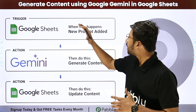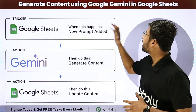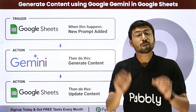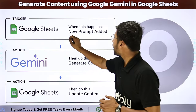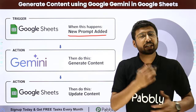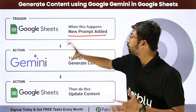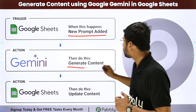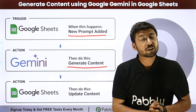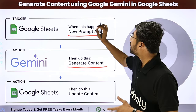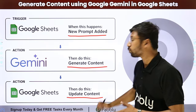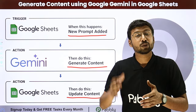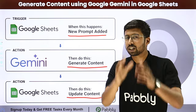In this video, we are going to learn how to generate content using Google Gemini in Google Sheets. We are going to set up an automation so that just by adding a new prompt in a Google Spreadsheet, you can automatically send that prompt to Google Gemini, generate the content, and update that same content back in the same Google Sheets. In this way, you can have the power of Google Gemini AI directly in your Google Spreadsheet.